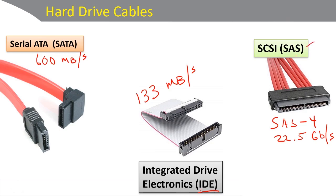What do we use SAS for? SAS is used for hard drive arrays, RAID systems, and network-attached storage. If you want really fast connections, want to store a lot of data, and want it to be really robust, then Serial Attached SCSI is one way to go. This uses a 32-pin connector — the SFF8484 connector that you'll see sometimes.